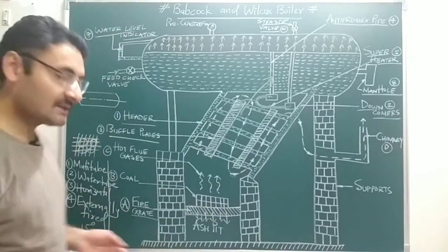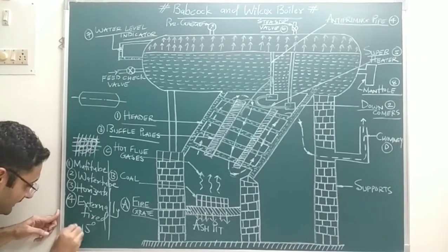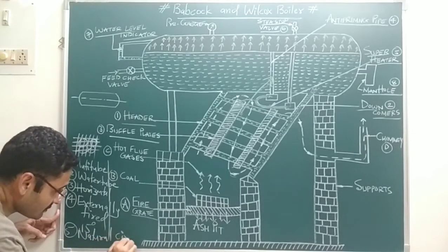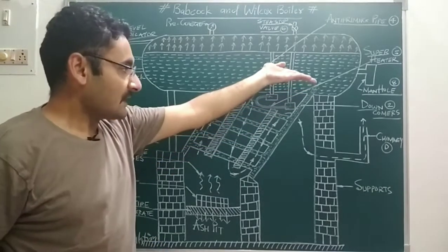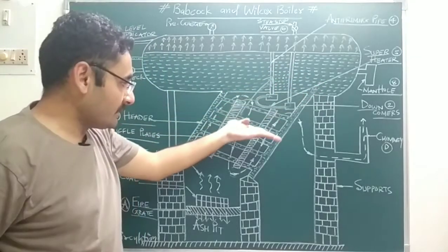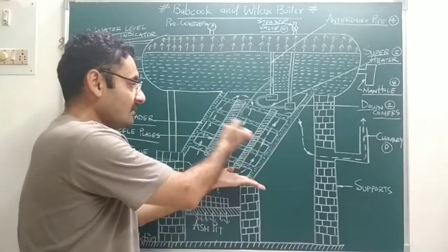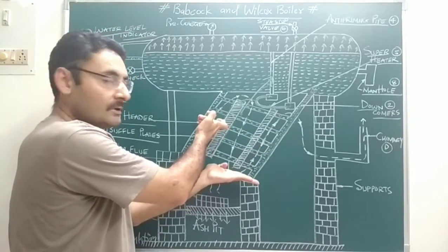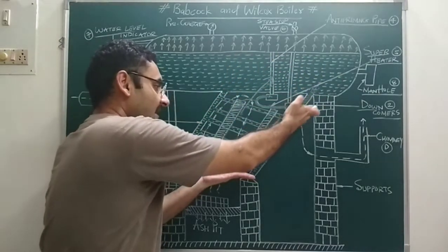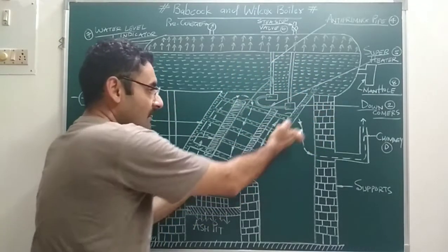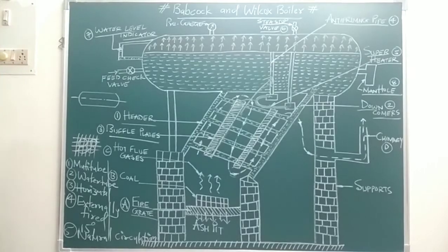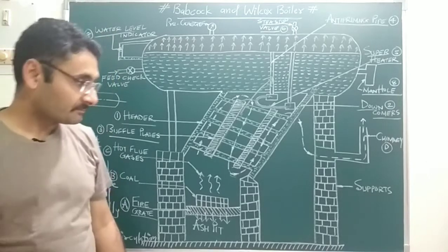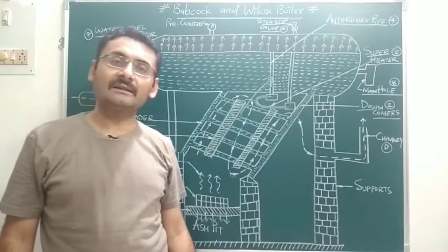This boiler is therefore also known as a natural circulation type boiler. Cold water has high density so it moves downward; when heated it becomes hot water with low density and moves upward. This density-driven circulation is also known as natural convection. These are the working principles of the Babcock and Wilcox boiler. Till then, read hard, work hard — thank you very much.